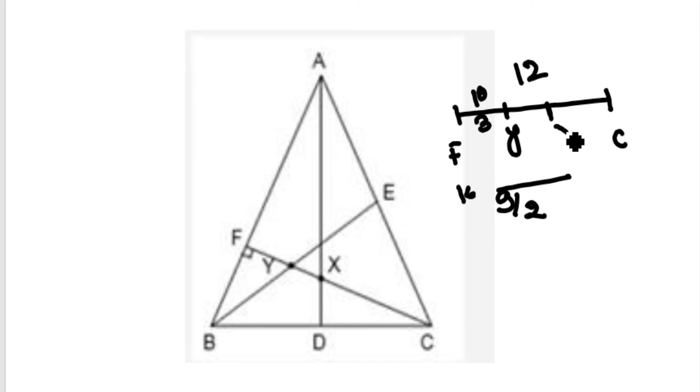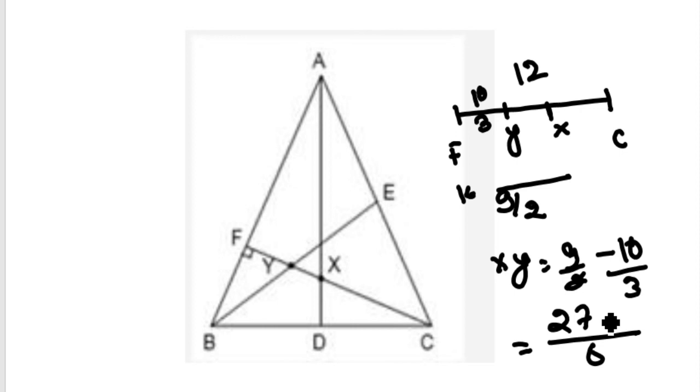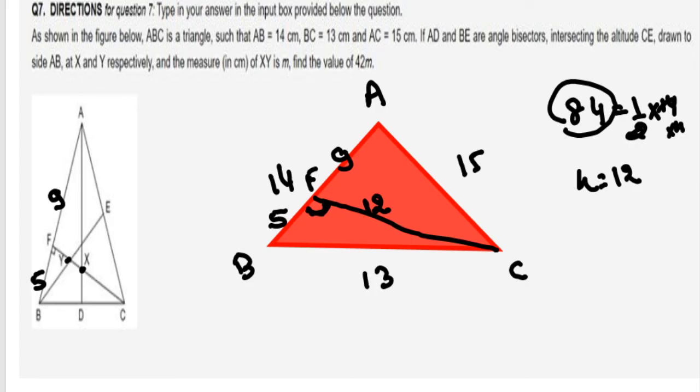And we have to find XY. XY is nothing but FX 9 by 2 minus 10 by 3. LCM is nothing but 6. That is nothing but 27 minus 20 is nothing but 7 by 6 is our XY. I hope this one is clear. In our question, we have to find XY which is 7 by 6. Just we found XY which is nothing but 7 by 6.